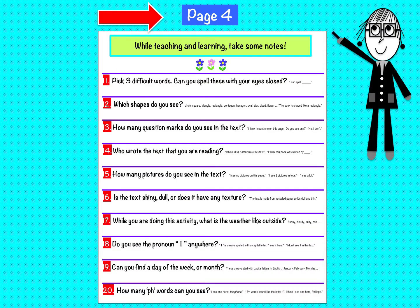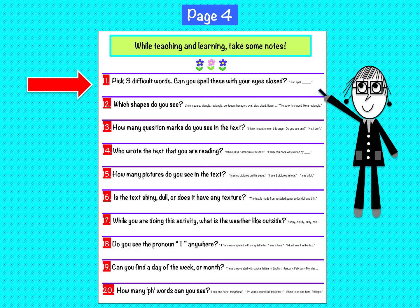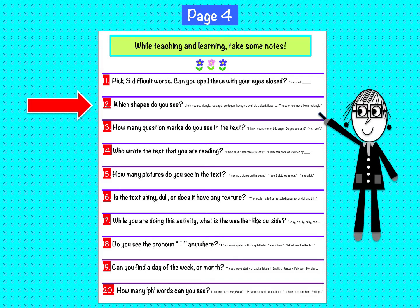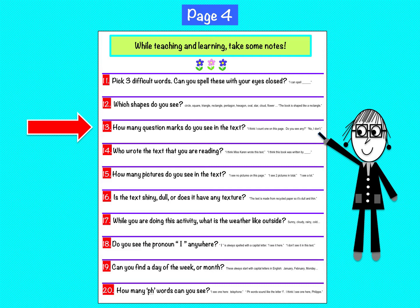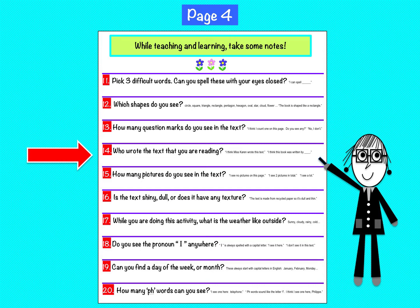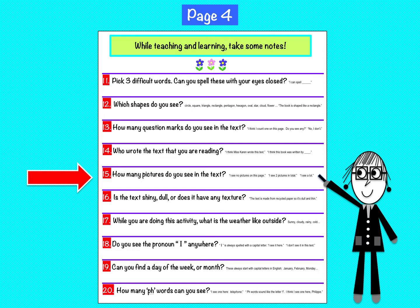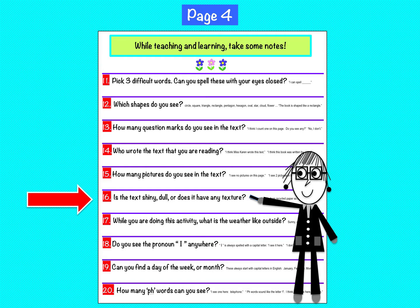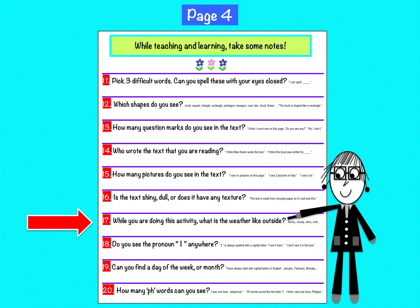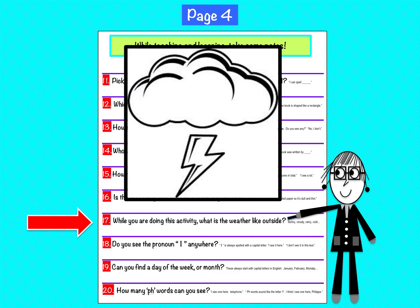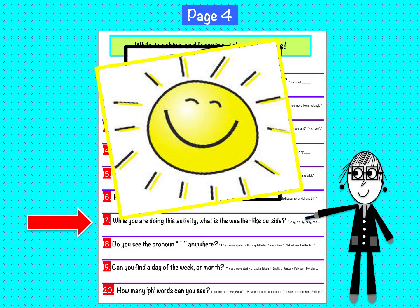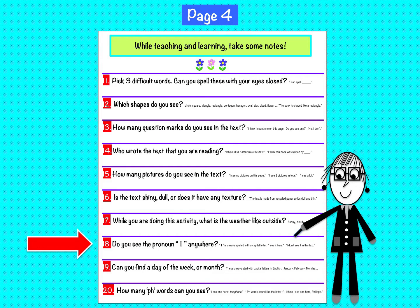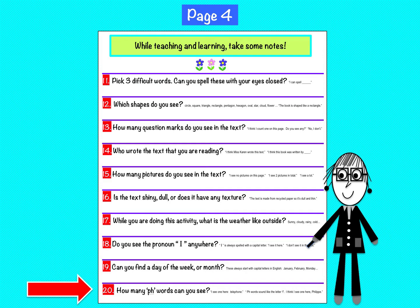Page 4: Pick three difficult words. Can you spell these with your eyes closed? Which shapes do you see? How many question marks do you see in the text? Who wrote the text that you are reading? How many pictures do you see in the text? Is the text shiny, dull, or does it have any texture? While you are doing this activity, what is the weather like outside? Do you see the pronoun 'I' anywhere? Can you find a day of the week or month? How many PH words can you see?